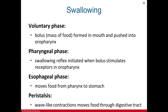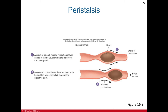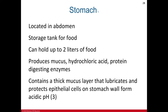Swallowing or deglutition has three phases. In the voluntary phase, a bolus of food is formed in the mouth and the tongue pushes it against the hard palate, forcing it toward the oropharynx. In the pharyngeal phase, a reflex is initiated when the bolus stimulates receptors in the oropharynx, elevating the soft palate to close off the nasopharynx. In the esophageal phase, peristaltic waves — wave-like contractions — move the food from the pharynx through the esophagus to the stomach.